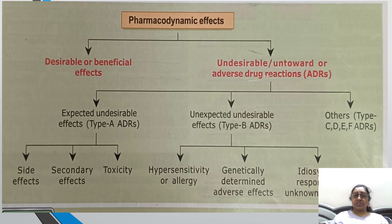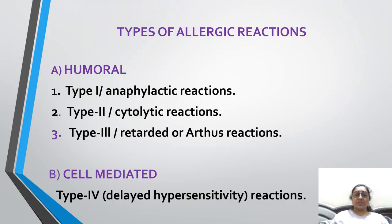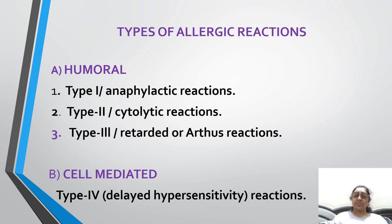Unexpected drug reactions can be subdivided into hypersensitivity reaction, genetically determined adverse drug reaction, and idiosyncratic drug reaction. Hypersensitivity drug reactions can be subdivided into humoral and cell-mediated allergy. The humoral type includes type 1 or anaphylactic reaction, type 2 or cytolytic reaction, and type 3 or retarded or Arthus reaction. Type 4 is the cell-mediated or delayed type of hypersensitivity reaction.